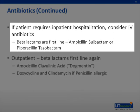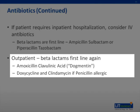If the patient requires inpatient admission, IV antibiotics are started, with beta-lactams as first-line agents — ampicillin-sulbactam or piperacillin-tazobactam being recommended. For oral outpatient therapy, amoxicillin-clavulanate is the go-to antibiotic, often referred to as 'dogmentin' because of its common use in mammalian bites. If the patient has a penicillin allergy, a combination of doxycycline and clindamycin is a reasonable alternative.